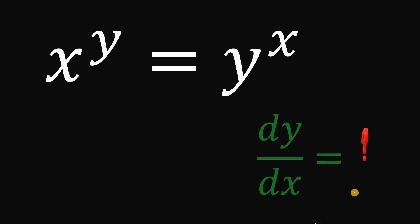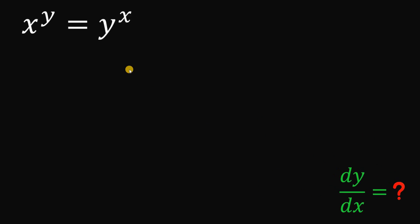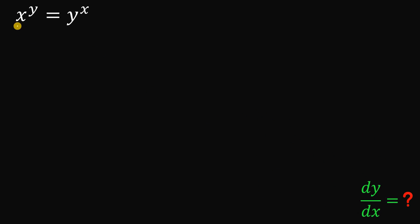I will show you the solution in 3, 2, 1. So, given this equation, x raised to the power of y equals y raised to the power of x, the goal is to find the derivative of y with respect to x, or dy over dx, which is the same thing as y prime.